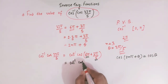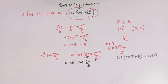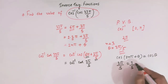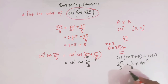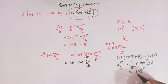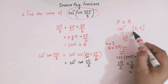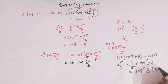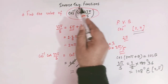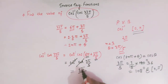Now we verify that 3π/5 lies in the principal value branch [0, π]. We can write 3π/5 as (3/5) × 180° = 108°, and 108° belongs to the interval [0°, 180°]. So the two terms cancel, and the value of the expression is 3π/5.